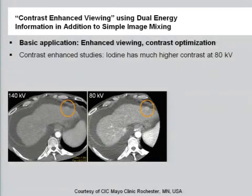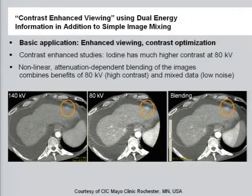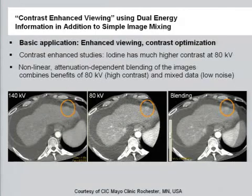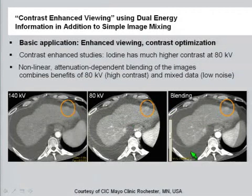A very basic application is so-called contrast-enhanced viewing. This means you combine the benefits of high contrast of iodine in the low KV image with the low noise of the total mixed data. The contrast is comparable to what you get from the 80 KV image, but the noise is comparable to the mixed image.